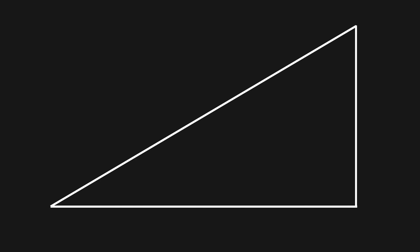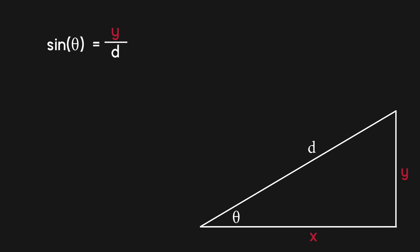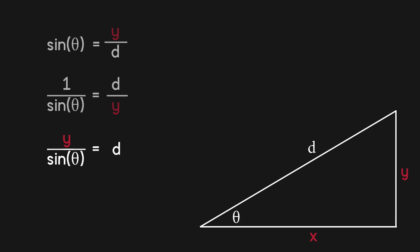Here's our slope. In white are the variables we know: d standing for our move distance, and theta standing for our slope angle. What we want to find are the variables in red: x and y. The sine of the angle equals the opposite side over the hypotenuse, so sine theta equals y over d. Solving for y: y equals d multiplied by sine theta. And we can do the same process with cosine to solve for x.